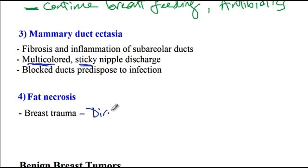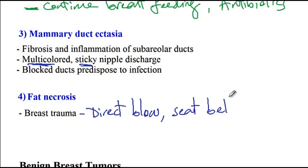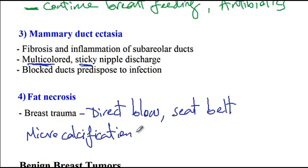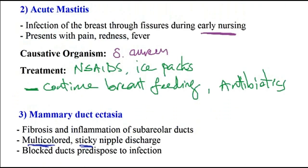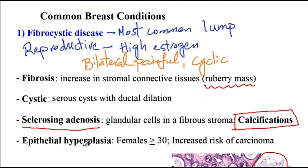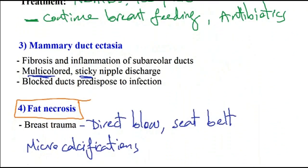An important point about fat necrosis is that radiographic images generally show microcalcifications that resemble breast malignancy. So again, both fat necrosis and fibrocystic disease of the breast — specifically the sclerosing adenosis type — are associated with calcifications. Not every calcification on mammogram means the patient has ductal carcinoma of the breast.